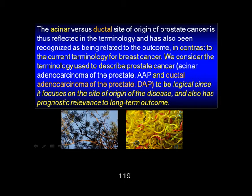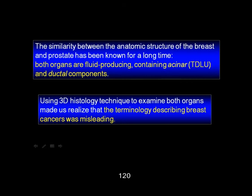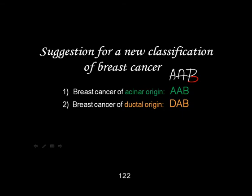So please keep in mind: acinar adenocarcinoma or ductal carcinoma — it's so important to distinguish. And they elegantly do in prostate, and totally forget in the breast, whether it originates from the gland or from the duct. But they say it in the prostate. So why don't we call it acinar adenocarcinoma of the breast, and ductal adenocarcinoma of the breast? It would be so simple — we would understand each other.